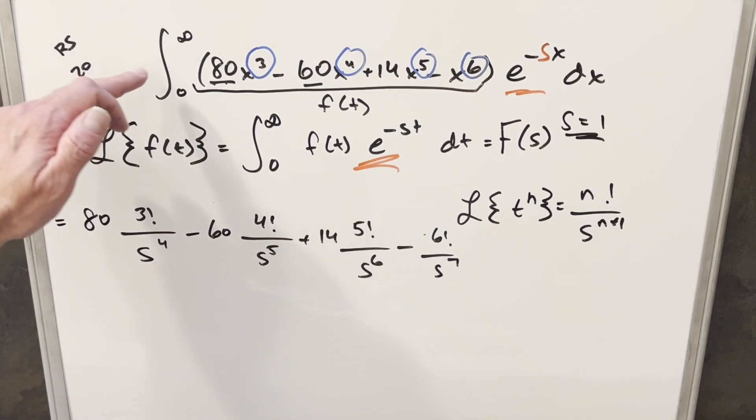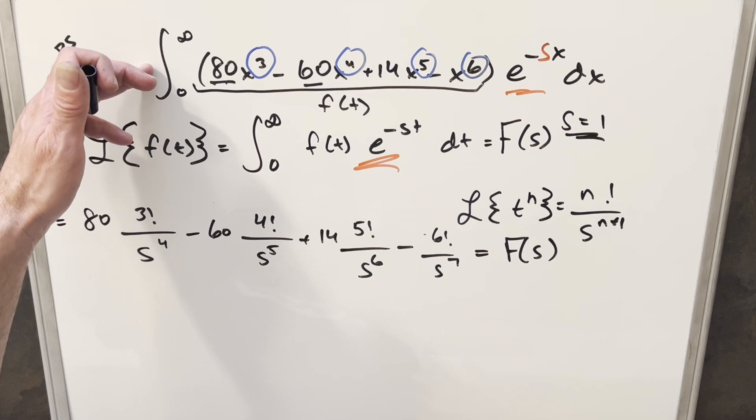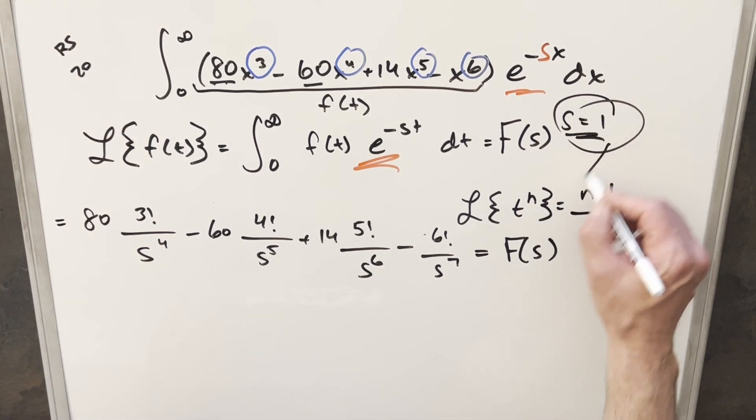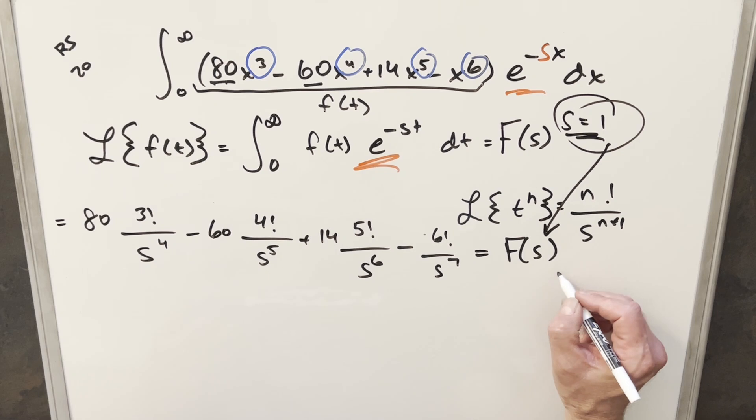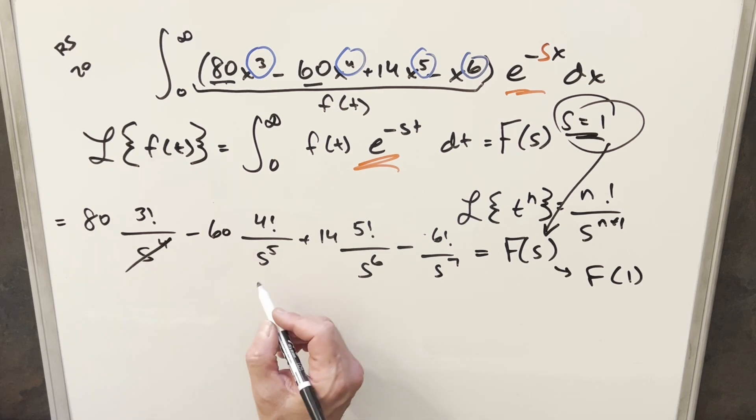So what we have here is actually the solution for this Laplace transform. This gives us our big F(s), but now of course we don't really want this s in here. For our integral, we should get a numeric value. Well, we know, back to our s equals 1, we can just plug that right in here, because what we want is to find F(1). Coming back to our function, you plug 1 in here, that's real easy, that's just going to be 1 in the denominator. The same thing here, the same thing here, the same thing here.